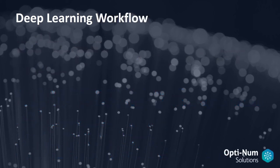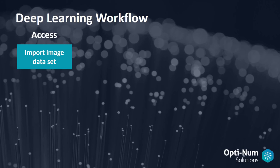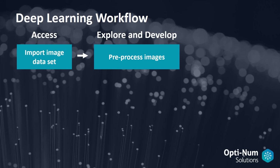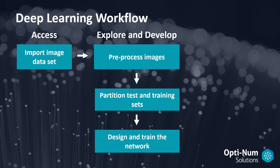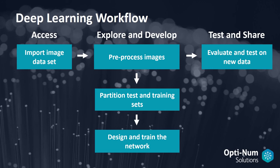For object recognition and classification, we're going to show a generic workflow for deep learning. The first stage is accessing your data — in this case, we're going to import an image data set. Next, we explore and develop using this data set, doing some processing on those images, possibly changing the size and color scale of the images. Then we partition our data into test and training sets, design and train a neural network, and finally evaluate and test this architecture on new data.